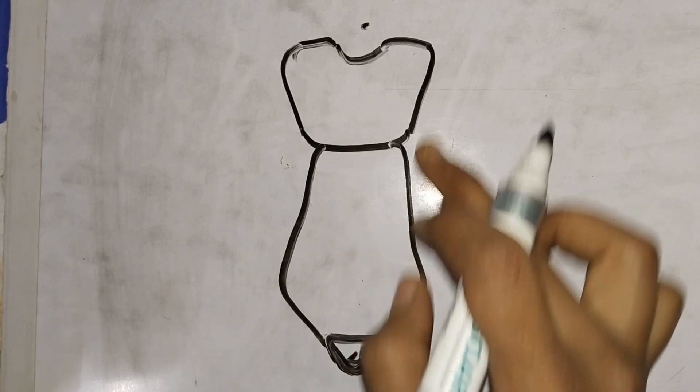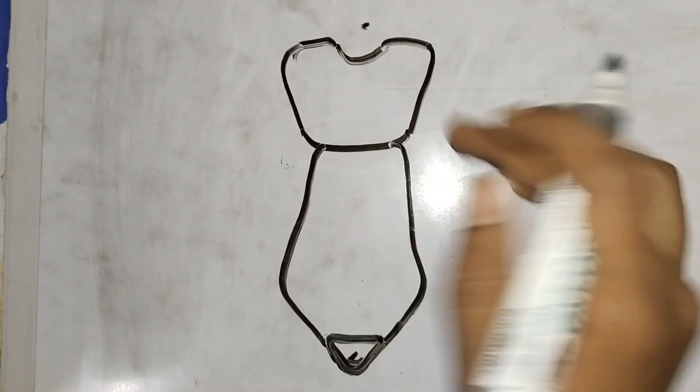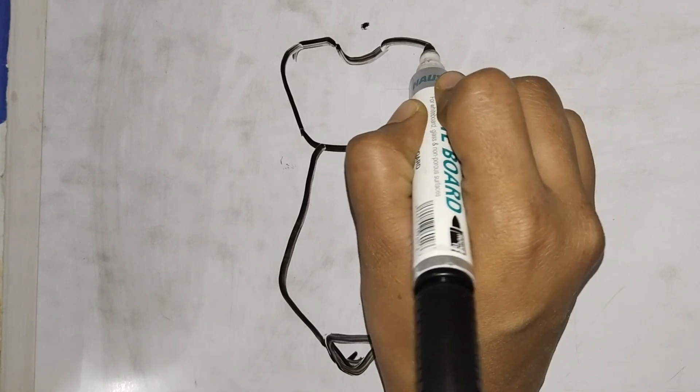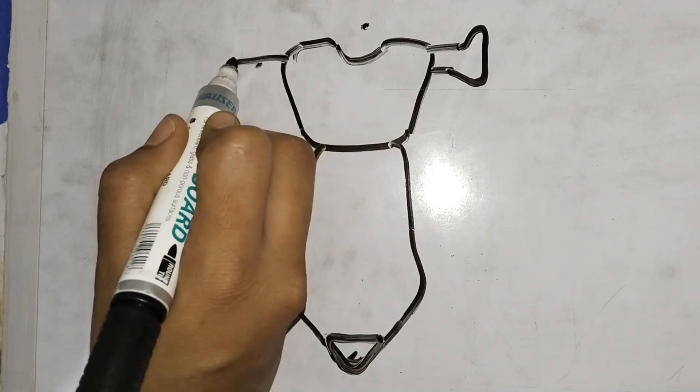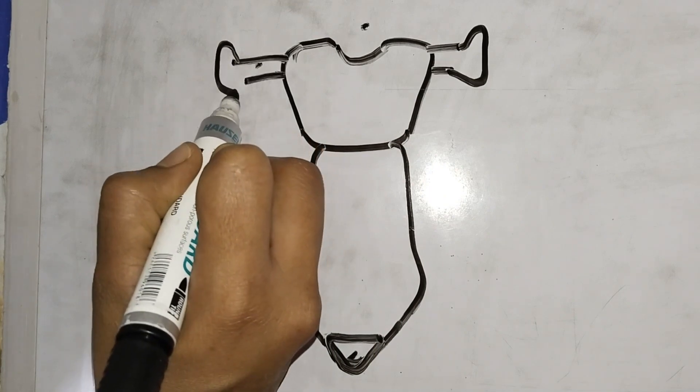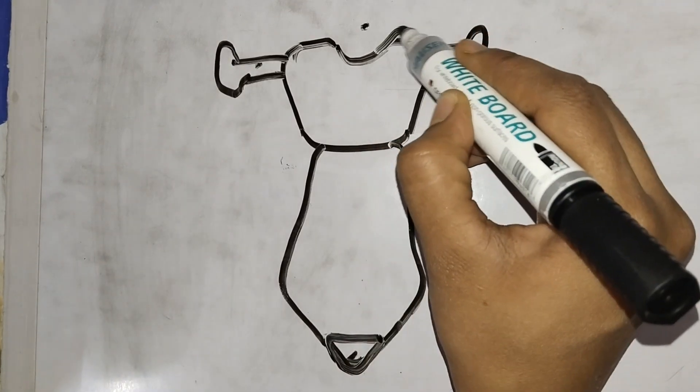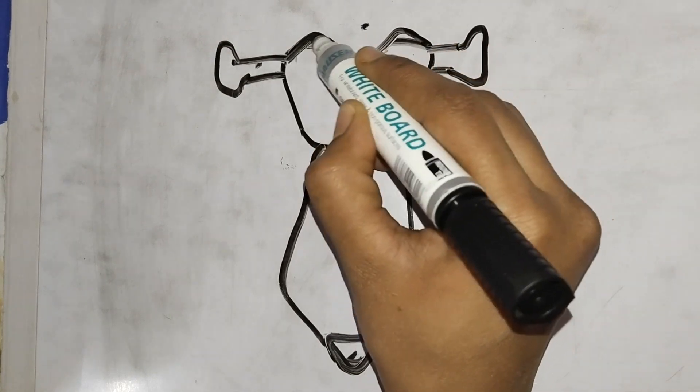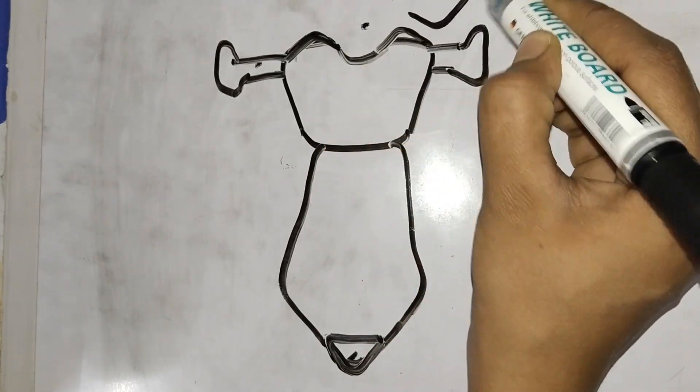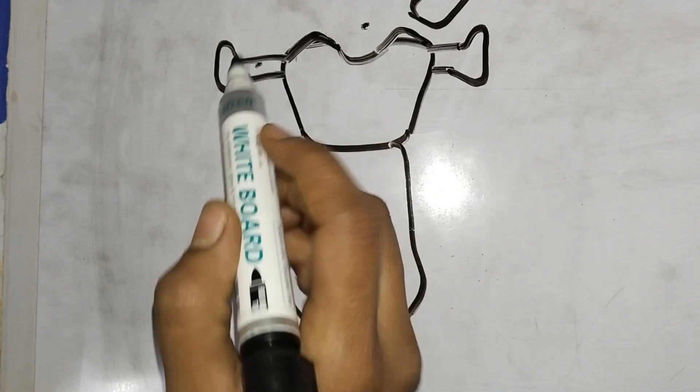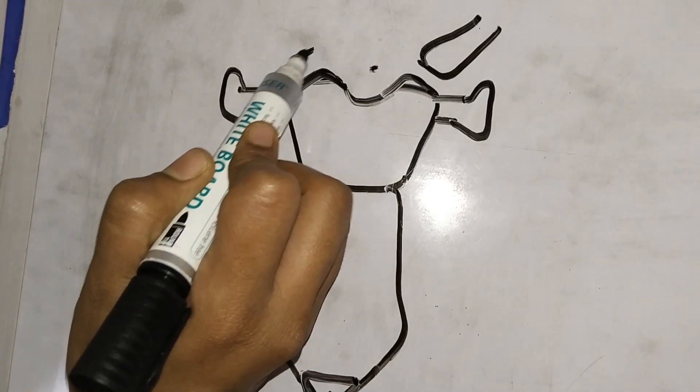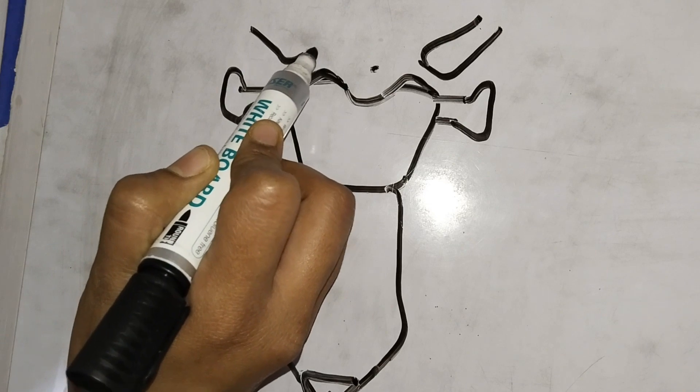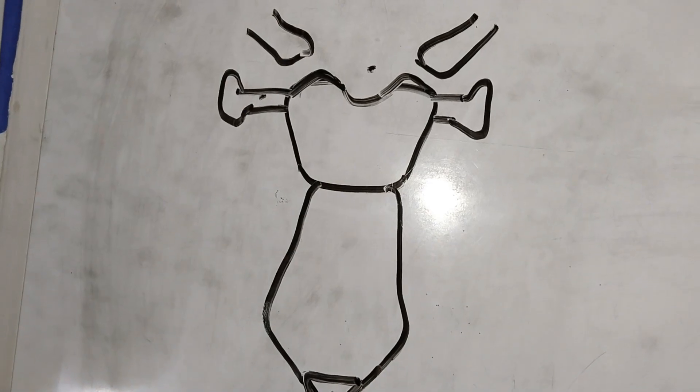So this is the first rib attachment. And now we have a protruded part. Here we have a clavicle attached.